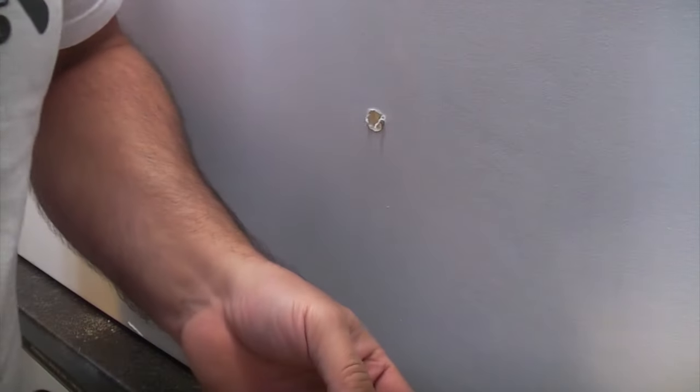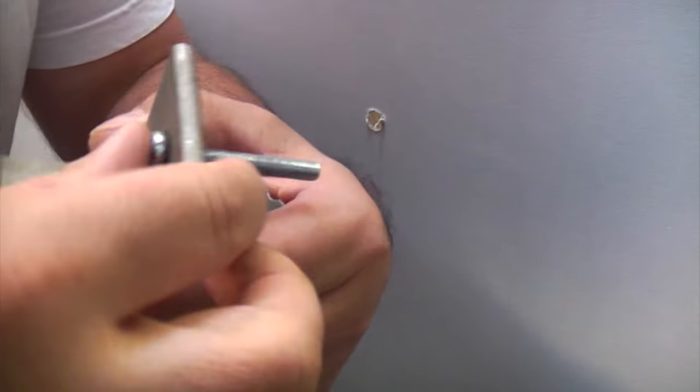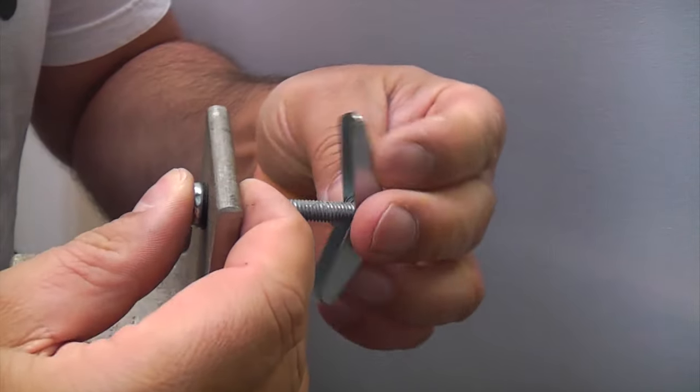One thing when you're using a spring toggle is that you need to get your bit that you're fastening to the wall on the toggle before you actually insert it.